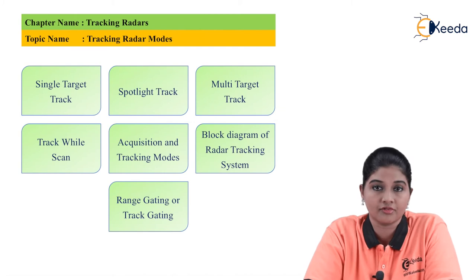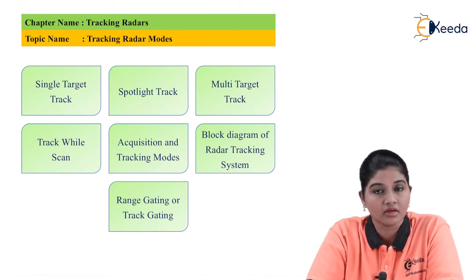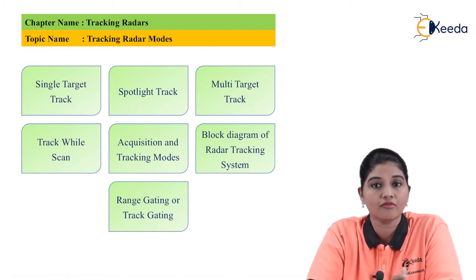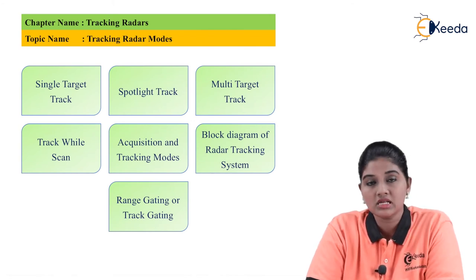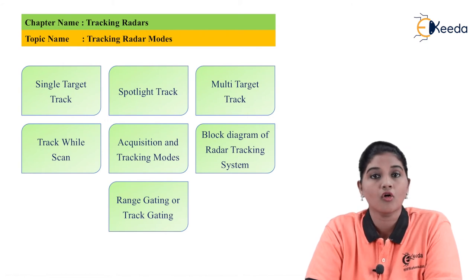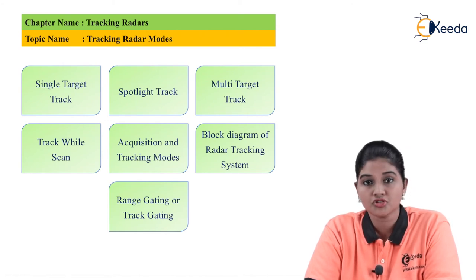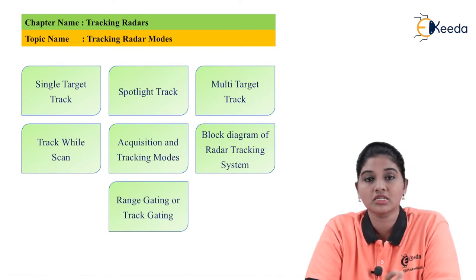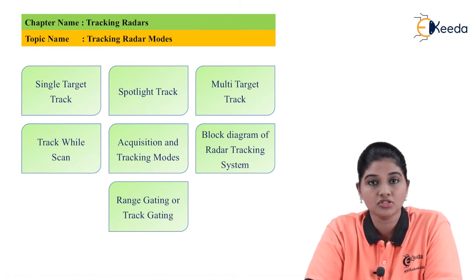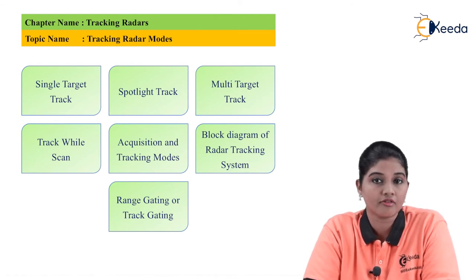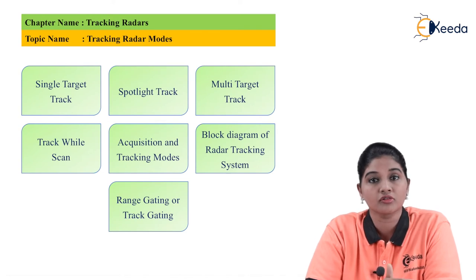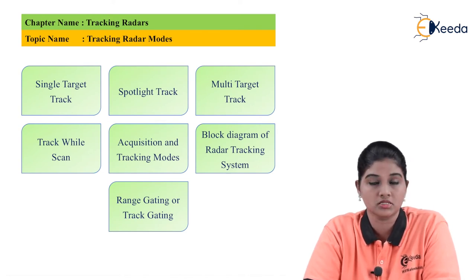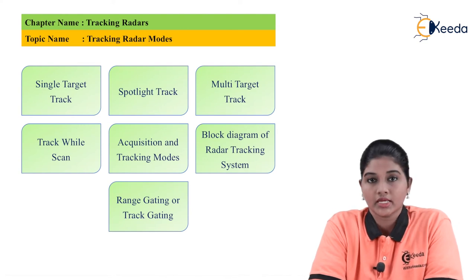The next type is multi-target track. In multi-target track, a single radar system is used to track several objects per cycle, so the single radar performs the function of multiple radars. For this type of tracking it is very important to use a changeable antenna beam, which is achieved by using electronically scanned antennas. Multiple target tracking provides information related to one or more than one target present in space.